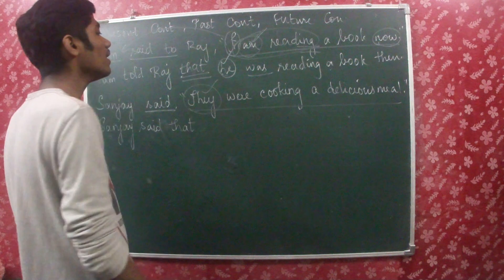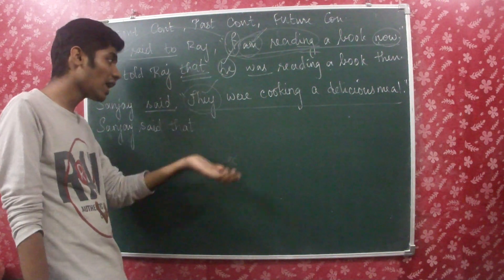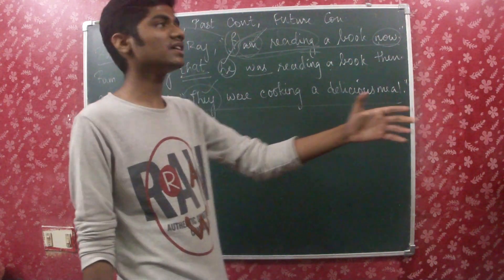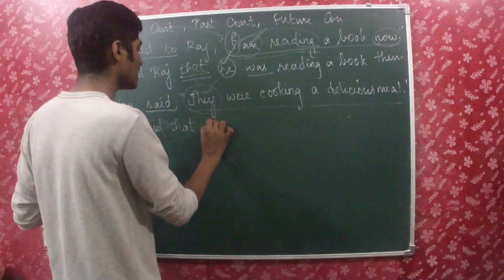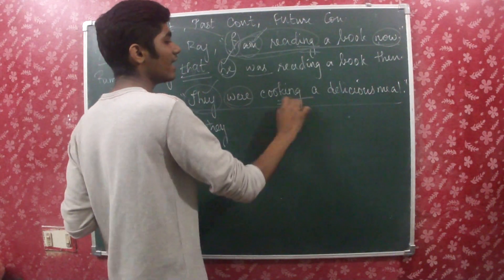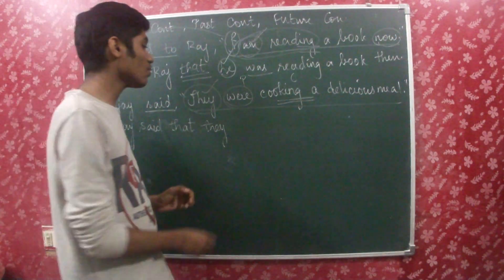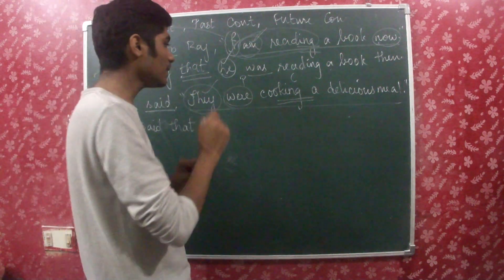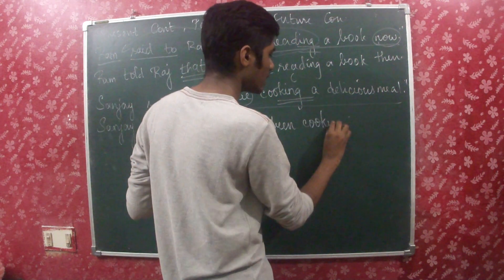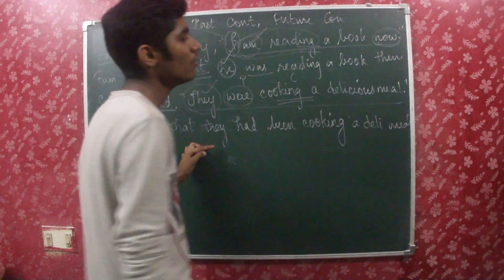Now for the pronoun: 'they' doesn't refer to Sanjay because he is just one person. If it had been 'I', it would have referred to Sanjay, but here it's 'they' — he is talking about some third person. So in the answer, you retain 'they' as 'they'. Sanjay said that they — and then 'were cooking' is past continuous, so it changes into past perfect continuous: had been cooking. The structure is had + been + verb + -ing. So: had been cooking a delicious meal.